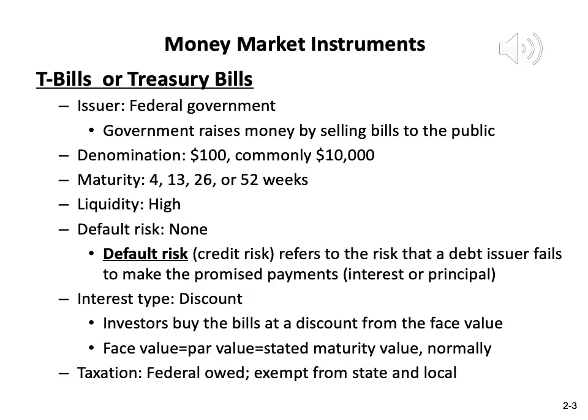The first and most important money market instrument is the treasury bill, or T-bill. The issuer of the treasury bills is the federal government. Whenever the government needs money, they can raise money by selling the treasury bills to the general public. When general public investors like you and me purchase the treasury bills from the government, we are actually lending money to the government. The denomination of the treasury bills are $100, meaning you can buy the bills in increments of $100.